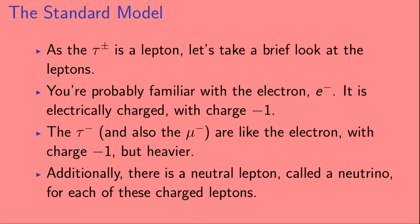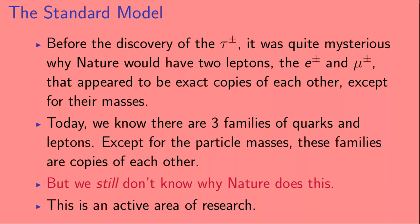As the tau is a lepton, let's take a brief look at the leptons. You're probably familiar with the electron, E minus — it is electrically charged with charge minus one. The tau minus, and also the mu minus, are like the electron with charge minus one, but they're heavier. Additionally, there is a neutral lepton called a neutrino for each of these charged leptons. Before the discovery of the tau, it was quite mysterious why nature would have two leptons, the electron and the muon, that appeared to be exact copies of each other except for their masses. Today we know there are three families of quarks and leptons; except for the particle masses, these families are copies of each other. But we still don't know why nature does this — this is an active area of research.